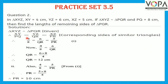From the proportion: 4 upon 8 equals 6 upon QR. After cross multiplying, QR equals 6 into 8 upon 4, so QR equals 12 cm. Similarly, 4 upon 8 equals 5 upon PR. After cross multiplying, PR equals 5 into 8 upon 4. Therefore, PR equals 10 cm.